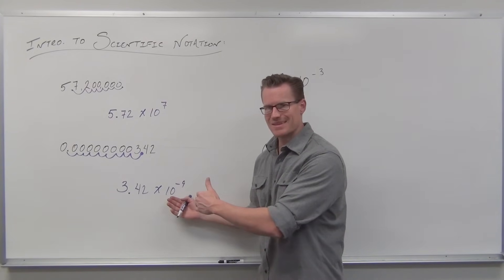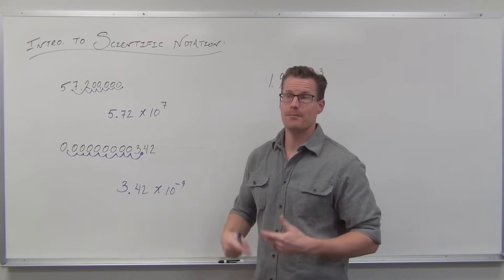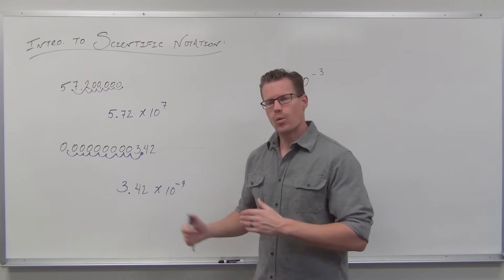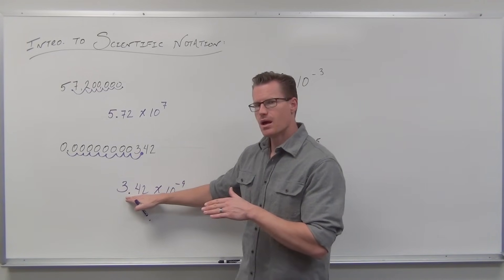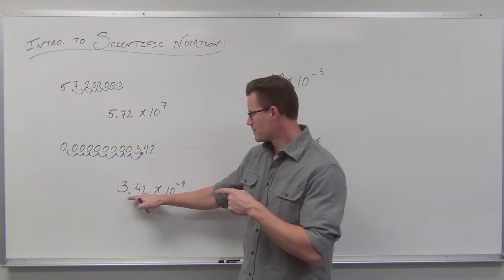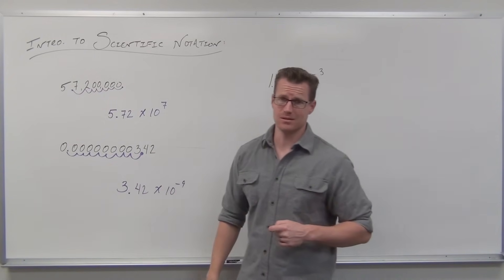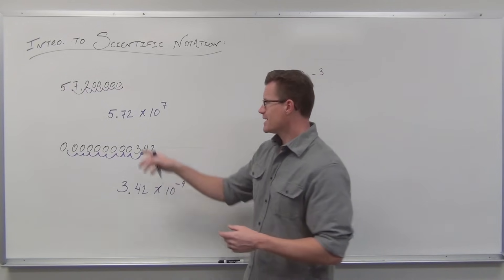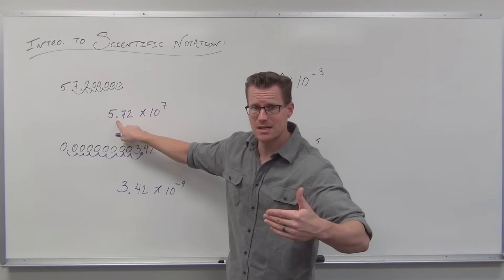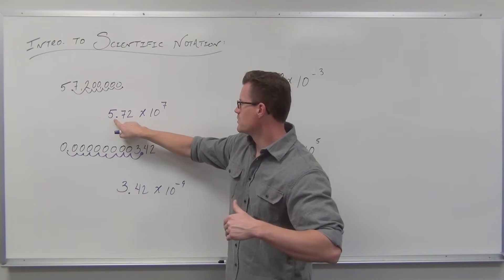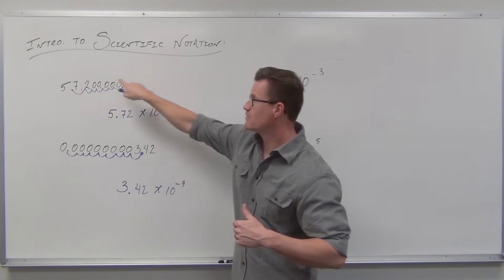Remember what 10 to the negative ninth is? That's 1 over 10 to the ninth — basically dividing that number by 10 to the ninth. So what that's saying is: yeah, it's not 3.42, but if you move the decimal nine places to the left, it gives you back the number you're trying to represent. And with the large number example: it's not 5.72, but because we're in a base 10 number system with powers of 10, if you move the decimal seven places to the right, it gives you back that number.